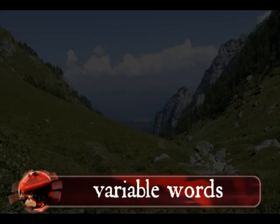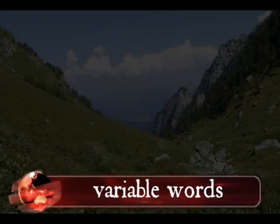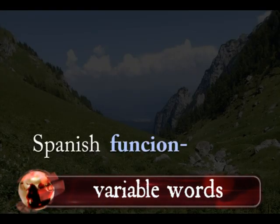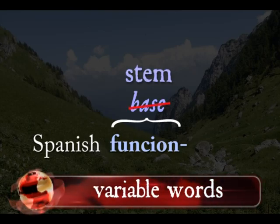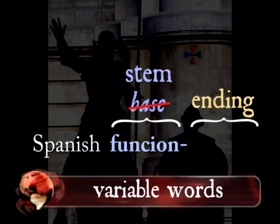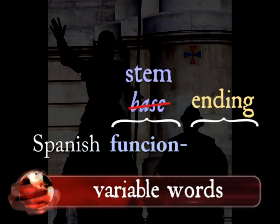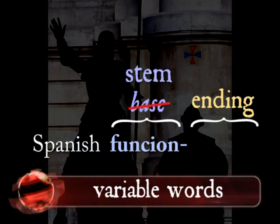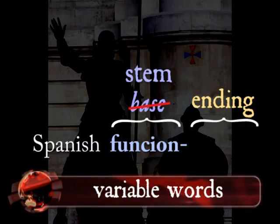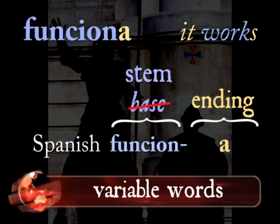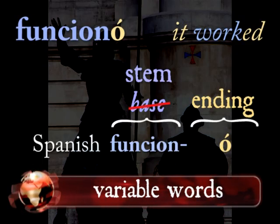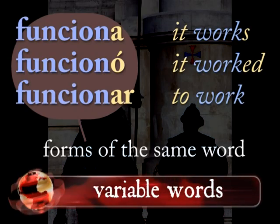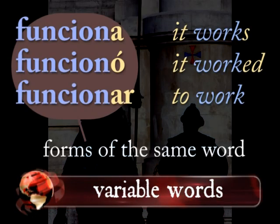So how do variable words vary? Not in any old way. Variable words vary in a very specific way. They have a base that carries the meaning — like this Spanish base, 'funcion.' We call this base a stem. Endings attach to the end of this stem and often carry some grammatical information. That Spanish stem 'funcion' can be used in the verb 'funciona' — it works — 'funcionó' — it worked — and so on. We'll treat these variations as different forms of the same word, not as completely different words.